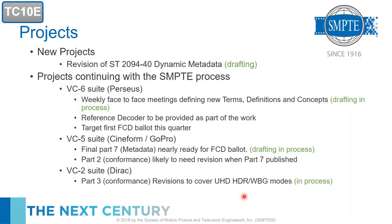VC-5, commonly known as the CineForm or GoPro high-quality codec — the very last part of this multi-part document, which is the metadata, is just about ready for FCD ballot. Once the metadata is finished there may also be some work required on Part 2, the conformance spec, to touch that metadata. The Dirac VC-2 conformance suite is being updated to include UHD, high dynamic range, and wide color gamut modes.